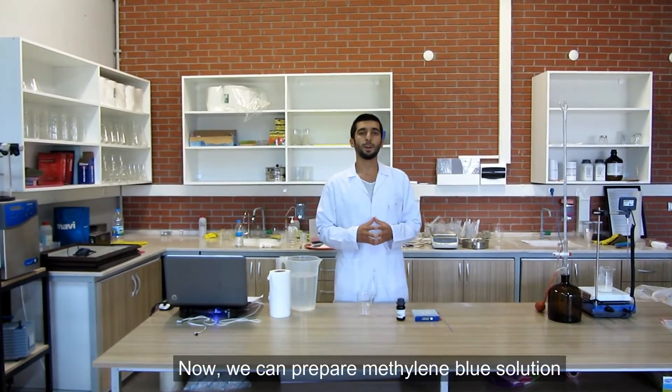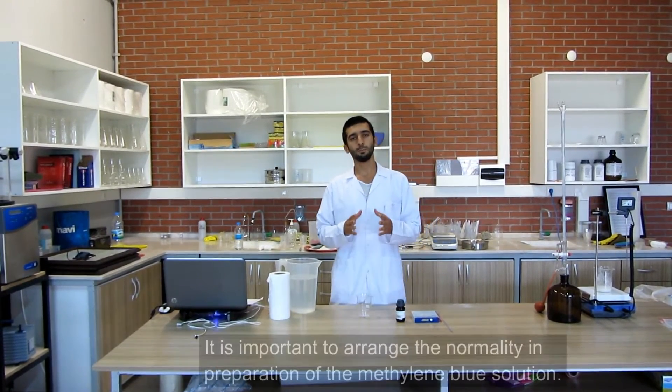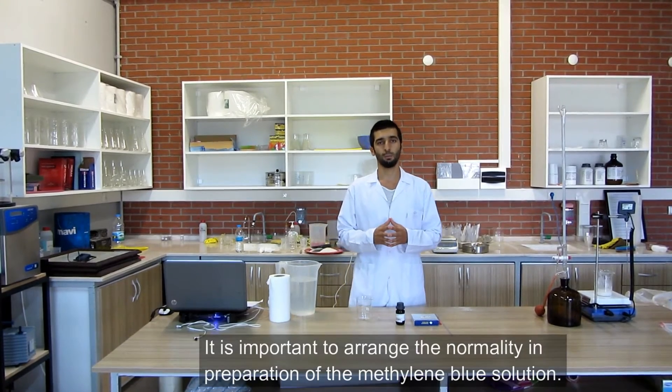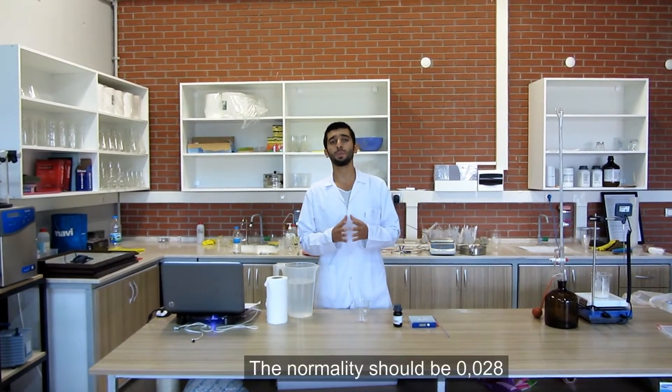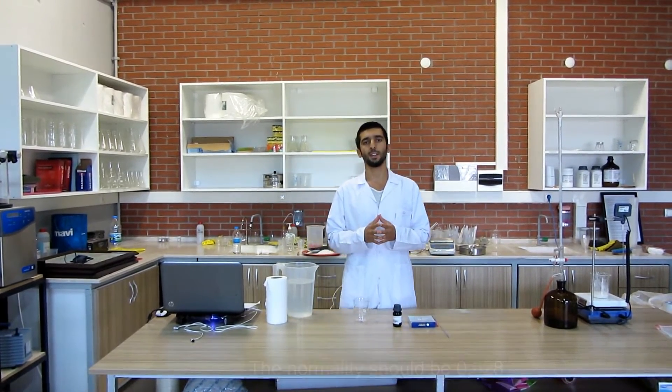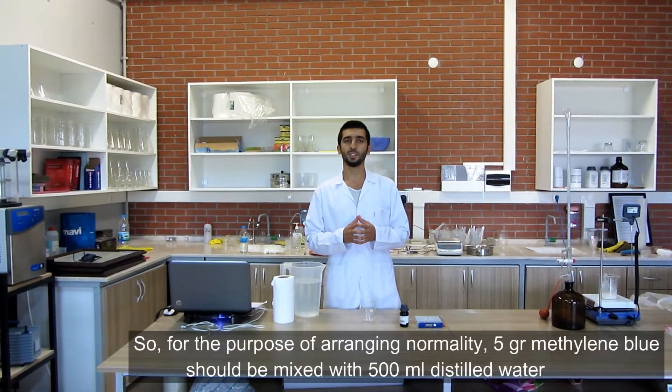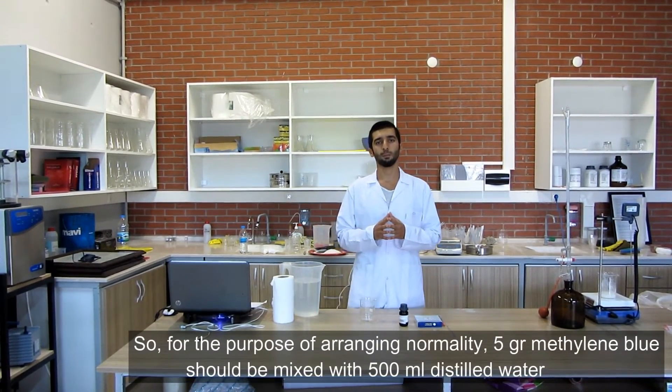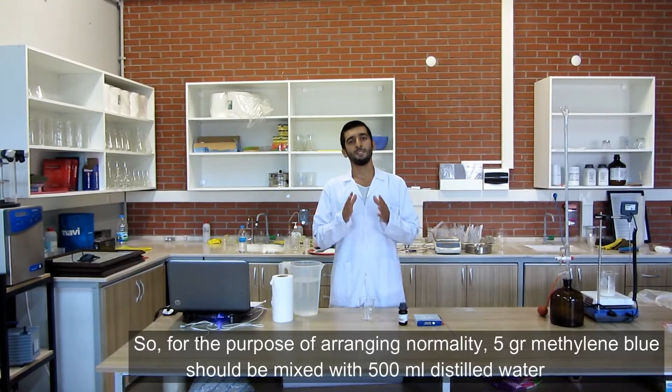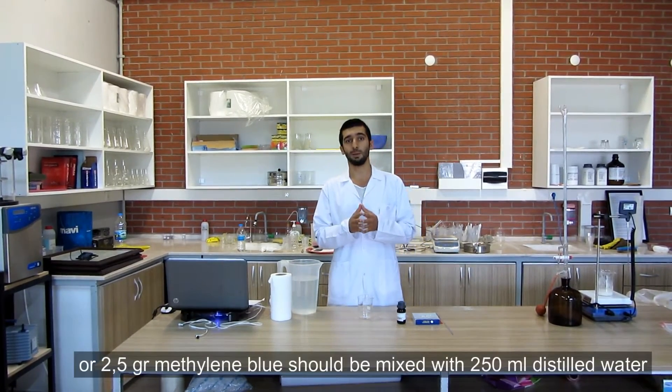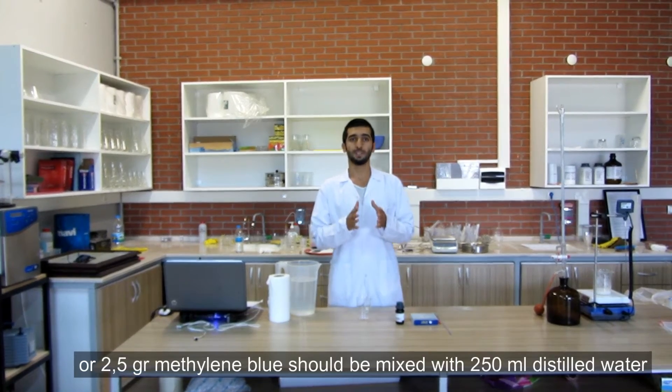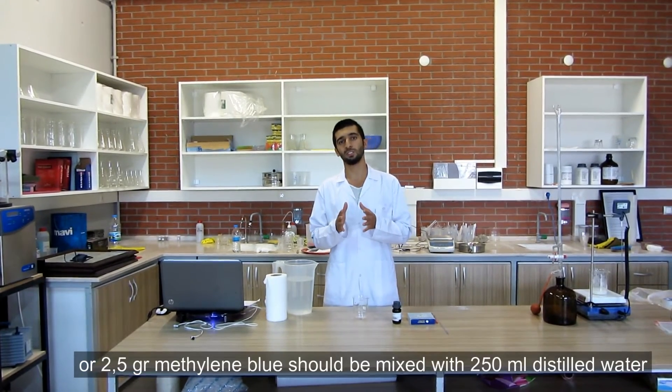Now we can prepare our Methylene Blue solution. It's important to arrange the normality in preparation of the Methylene Blue solution. The normality should be 0.028. So, for the purpose of arranging the normality, 5 grams Methylene Blue should be mixed with 500 ml distilled water or 2.5 grams Methylene Blue should be mixed with 250 ml distilled water.